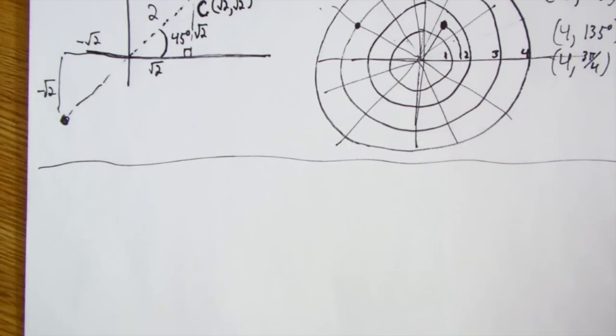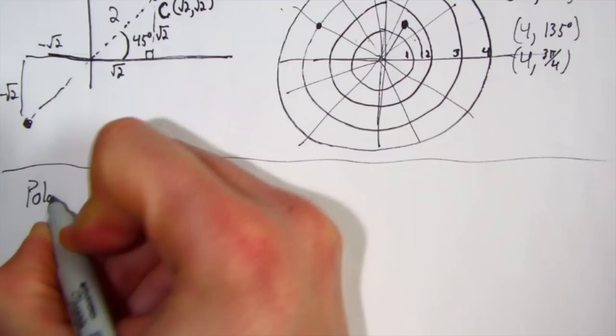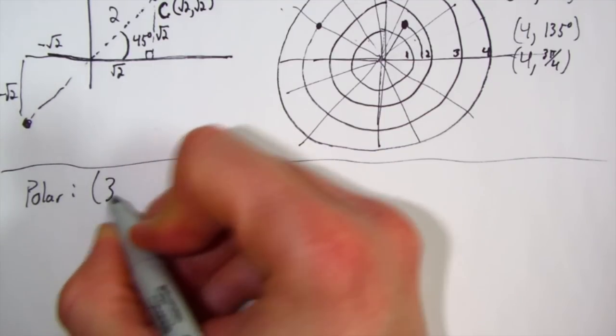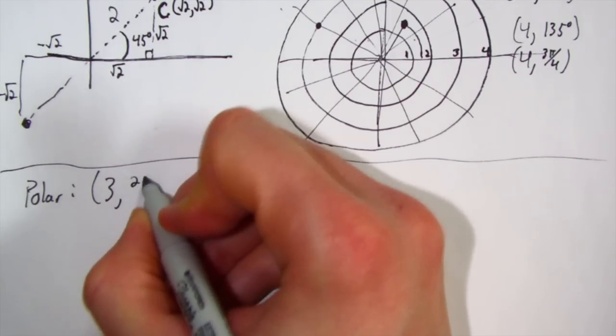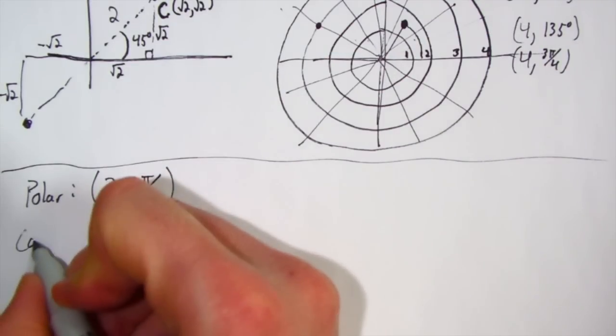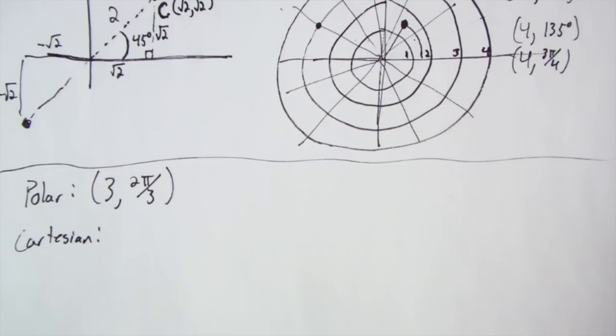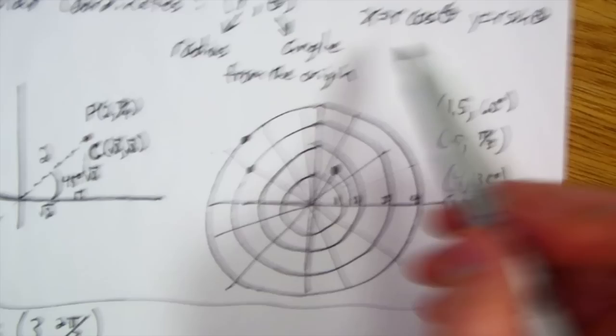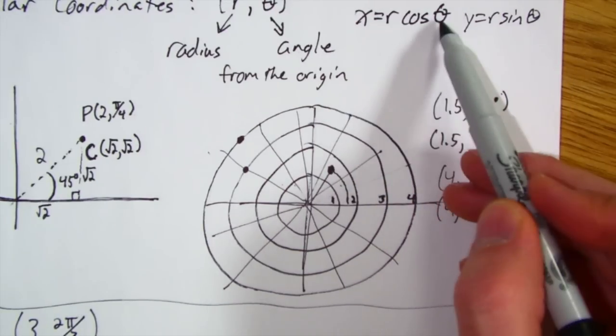So we're going to start with - let's do the polar coordinates. So polar is, let's say, 3 comma 2π over 3. And we want to know the Cartesian for that. Where do we start? Well, to go from polar to Cartesian, we use this. So we're trying to get x, we're trying to get y, and we know what r and θ are.